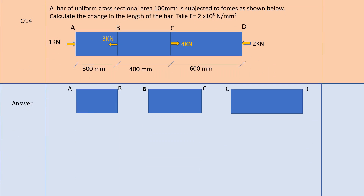Problem 3: A bar of uniform cross-sectional area 100 mm² is subjected to forces as shown. Calculate the change in length of the bar. Take E equal to 2 into 10⁵ N/mm². When forces differ at different sections, first draw the free body diagrams for AB, BC, and CD — draw three rectangles for AB, BC, and CD.